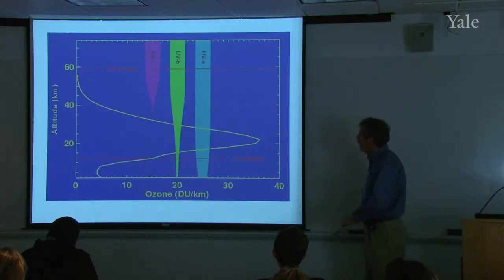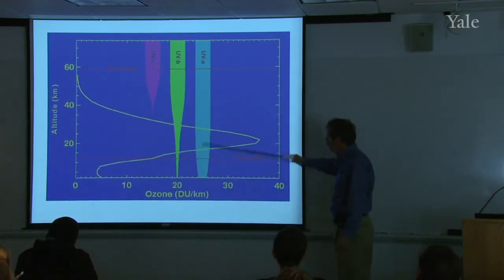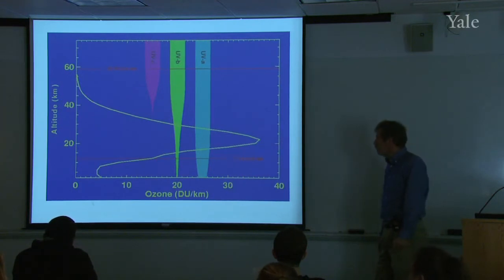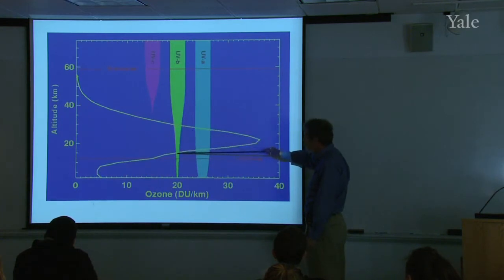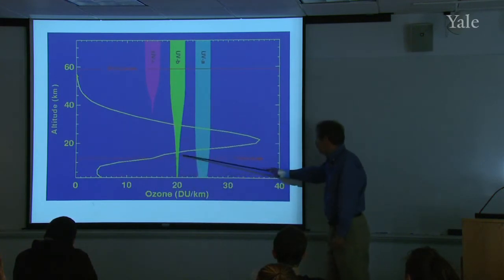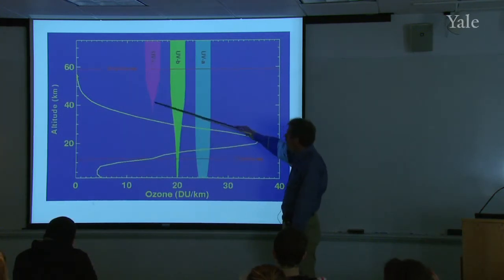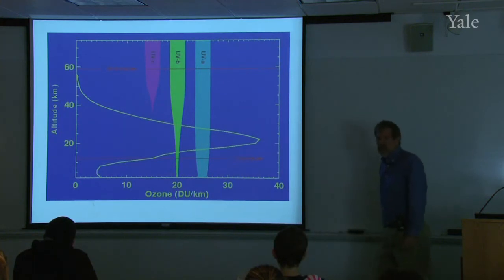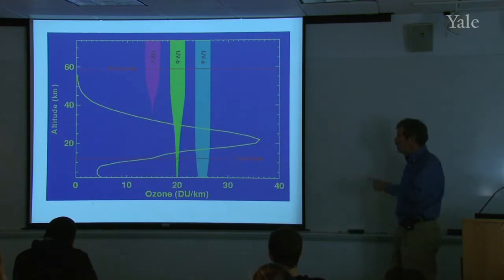Here's the fate of UVA, UVB, and UVC. Some UVA comes through. About half or more of the UVB is absorbed in the ozone layer. And thankfully, almost all of the UVC coming from the sun is absorbed by the ozone layer. So it's a very good protective shield for us.